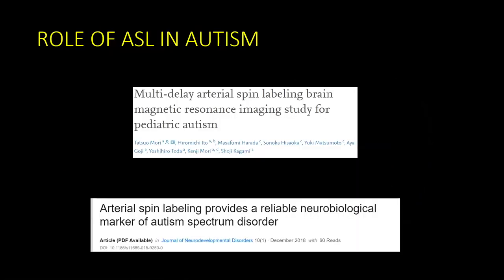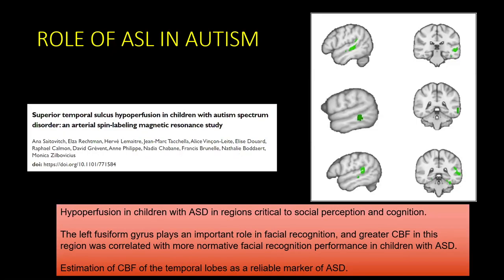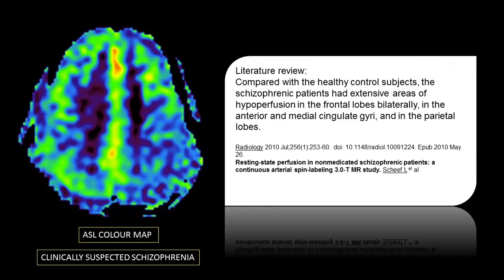Coming to the role of ASL in autism spectrum disorder (ASD), there are several papers discussing hypoperfusion in children with ASD in regions critical to social perception and cognition. Superior temporal sulcus hypoperfusion in children with autism spectrum disorder is commonly seen. Even in patients with symptoms towards schizophrenia, there are studies — including our own patients — where hypoperfusion is typically described in the medial cingulate gyri and parietal lobes.